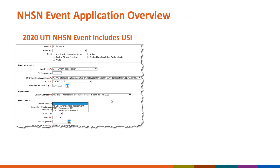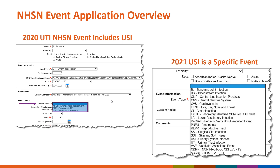In 2020, UCI was a specific event under the UTI event type. The change now appears within the NHSN application in 2021, where UCI is an event type on its own and is included in the drop-down listing.